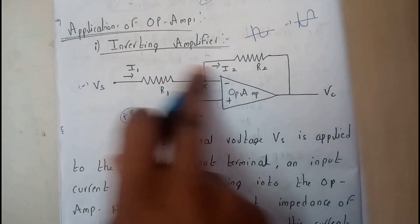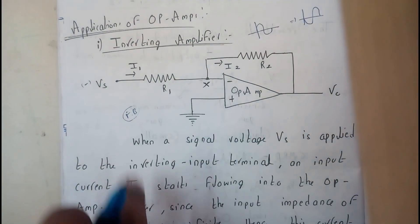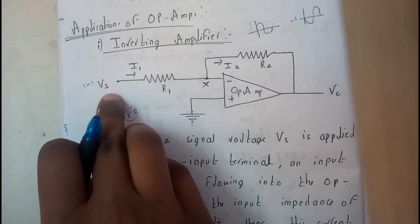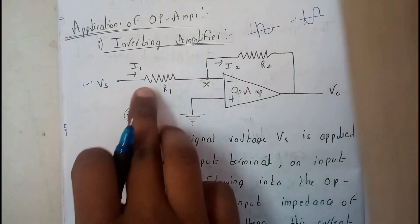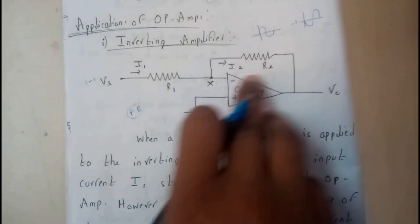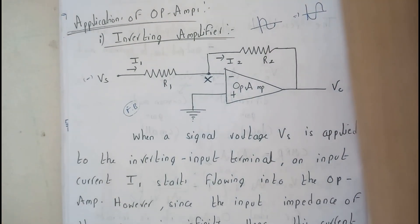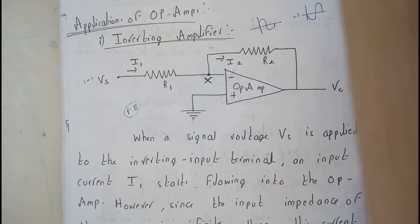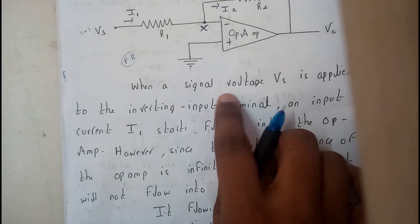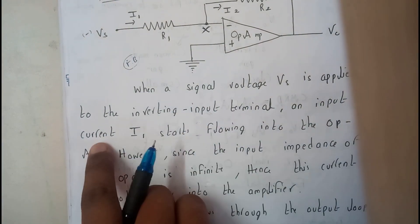There is a feedback to the inverting terminal — that is the only remaining terminal, so we connect feedback there. We will be assuming that the input is VS, the output is V-naught, I1 is the current flowing through R1, I2 is the current flowing through R2, and the feedback is given to point X. When a signal source VS is applied to the inverting input terminal, input current I starts flowing into the operational amplifier.